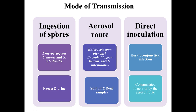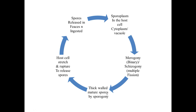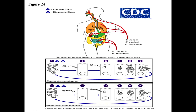Mode of transmission can be ingestion of spores — seen in Enterocytozoon species via fecal and urine contamination — or aerosol route in certain other species where infection would be through sputum and respiratory samples, or direct inoculation seen in keratoconjunctival infection via contaminated fingers or aerosol. Spores are released in feces; sporoplasm comes out, attaches to and enters the host cell, a cytoplasmic vacuole forms, merogony and sporogony take place, thick-walled mature spores are produced, and the host cell stretches and ruptures, releasing spores. Infection can occur through ingestion or respiratory routes, and both asexual and sexual cycles produce more spores.